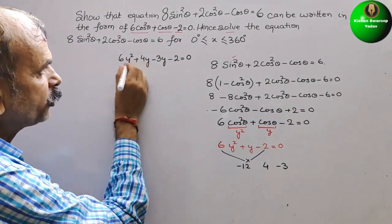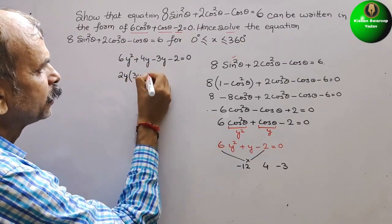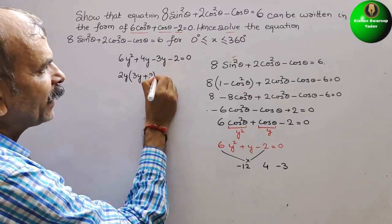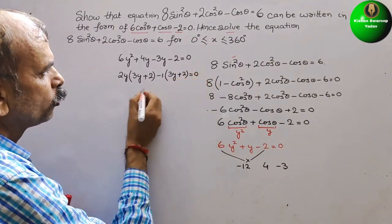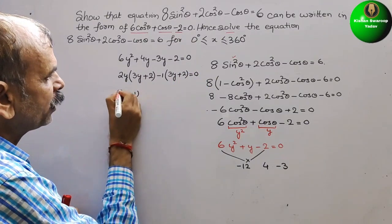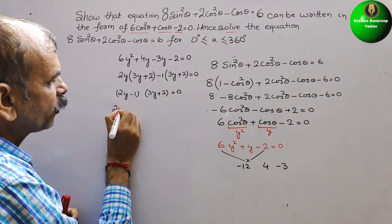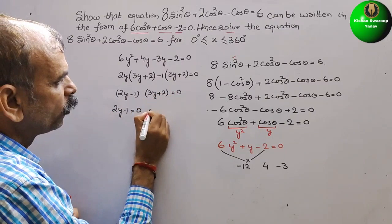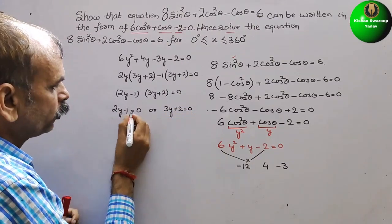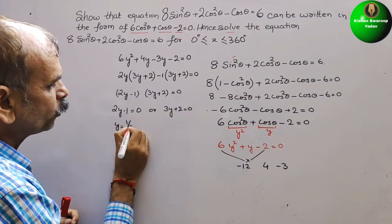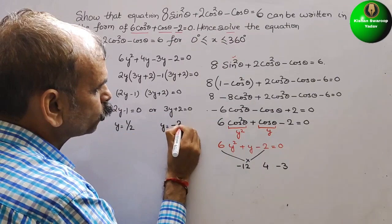Factoring: from the first two terms, 2y is common giving 2y(3y + 2), and from the last two terms, -1(3y + 2). So the two factors are (2y - 1)(3y + 2) = 0. Therefore 2y - 1 = 0 or 3y + 2 = 0, giving y = 1/2 or y = -2/3.